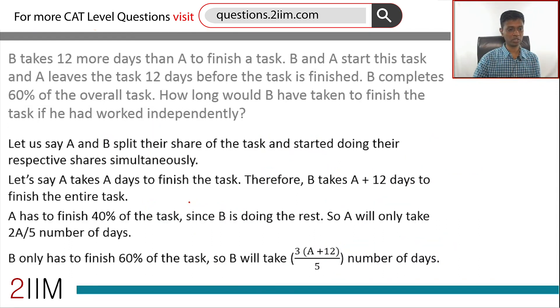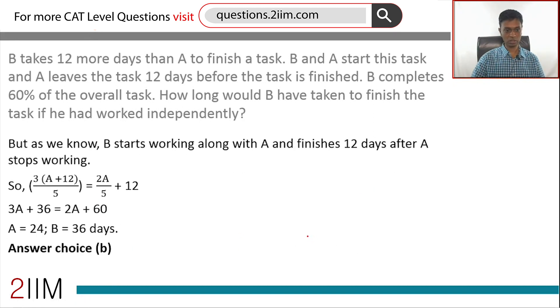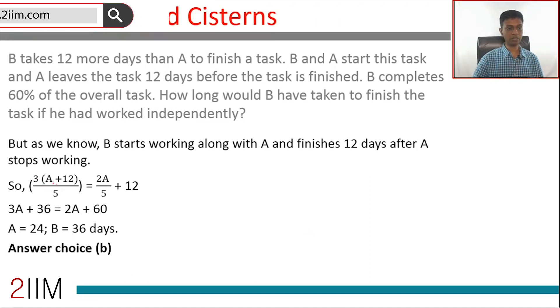A takes a days to finish the task, B takes a + 12. A finishes 40% of the task in 2a/5. B will finish 60% of the task in 3/5 * (a + 12). Just 3/5 * (a + 12) is 2a/5 + 12. Solve this, we get a = 24. B is 12 more than A.